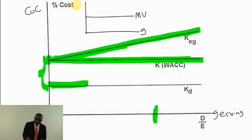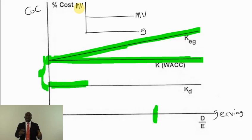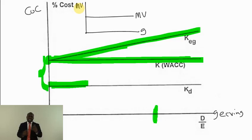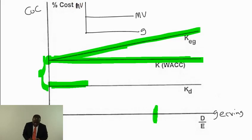My advice: the examiner will not mention Miller and Modigliani by name, but the moment you read a question and see movement in gearing — debt/equity movement — and they ask for WACC or market value, that is M&M territory. Miller and Modigliani came out with models — equations — which form the propositions. These are the equations for the lines on the graph, and they are divided into three propositions.